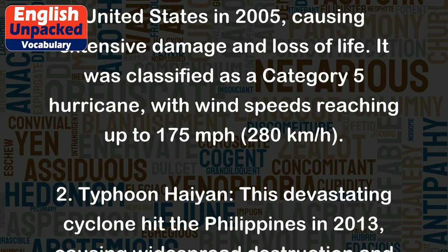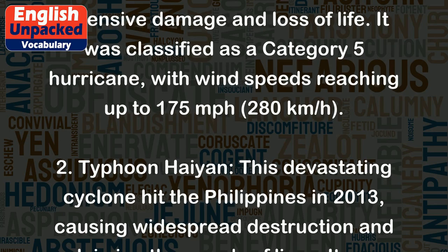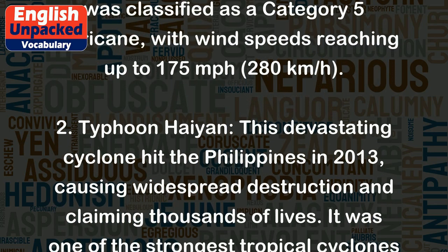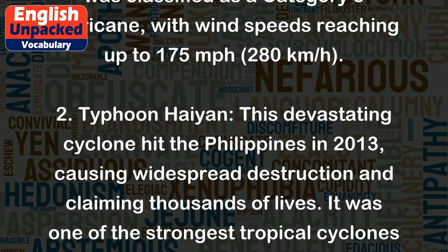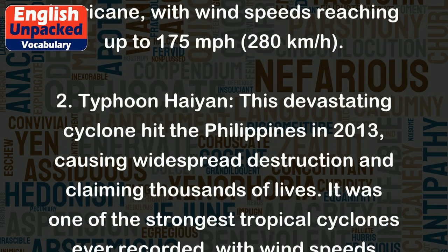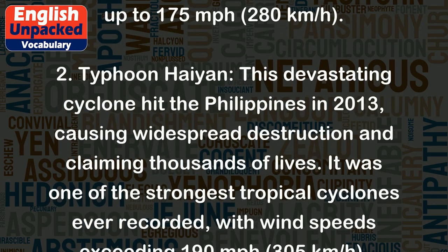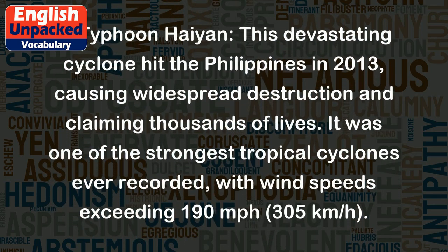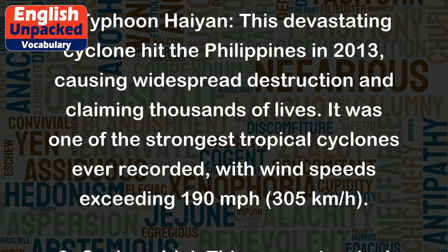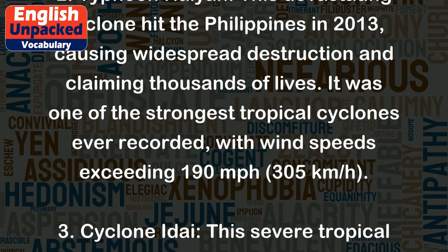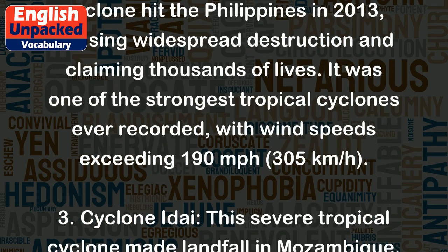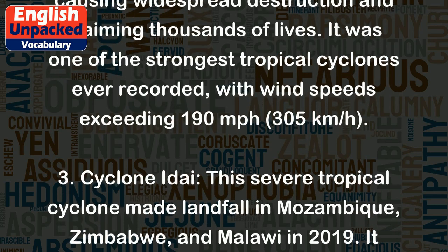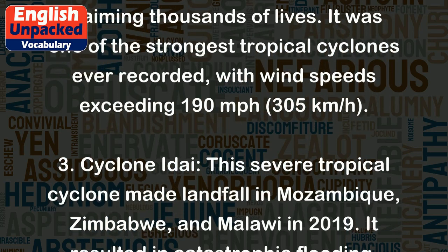2. Typhoon Haiyan: This devastating cyclone hit the Philippines in 2013, causing widespread destruction and claiming thousands of lives. It was one of the strongest tropical cyclones ever recorded, with wind speeds exceeding 190 mph.